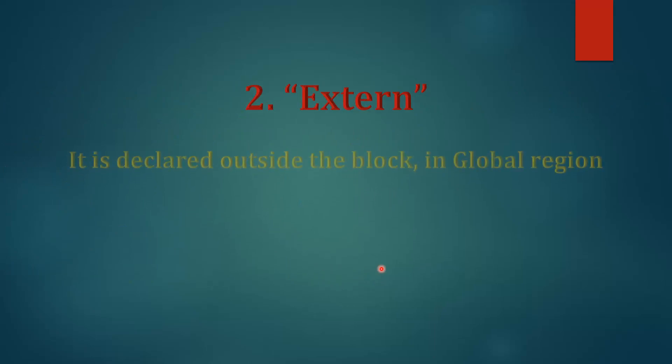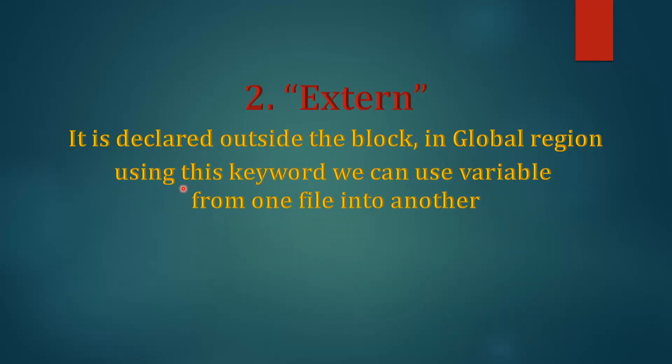The second one is external. It is declared outside the block in global region, that is in the top of the file, outside the main block. Using this keyword, we can use variable from one file into another. If we are making a project in which there are multiple files, libraries, etc., and there is a variable in another file and we want to use it in another file, then we can use this keyword. The format to declare it is shown below.